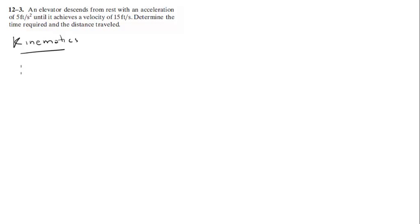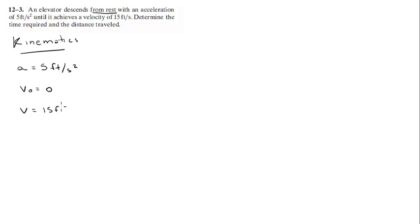First we're gonna write down what we have. We have that the acceleration is equal to 5 feet per second squared. We have that the starting velocity is zero because it says from rest. We got that the velocity achieved is 15 feet per second, and we got that the starting position is zero because it's not otherwise specified.